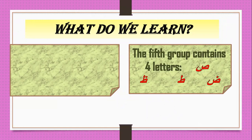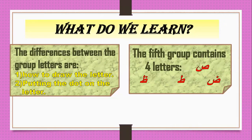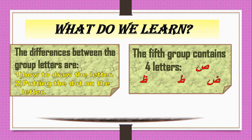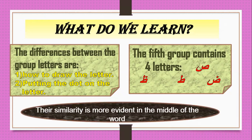The fifth group contains four letters: Sa, Da, Ta, Da. The differences between the group letters are two. The first difference is how to draw the letter. The second difference is putting the dot on the letter. Their similarity is more evident in the middle of the word.